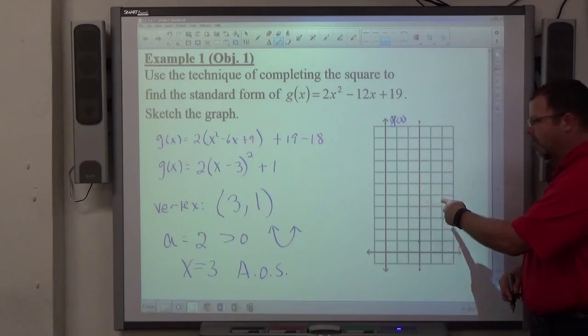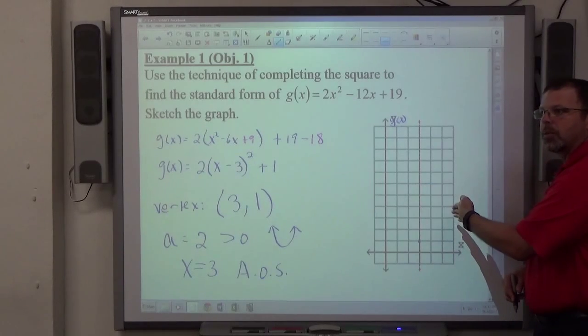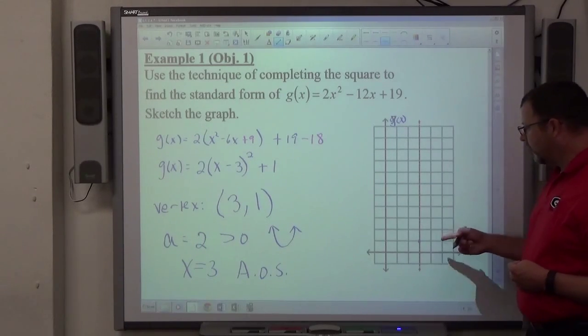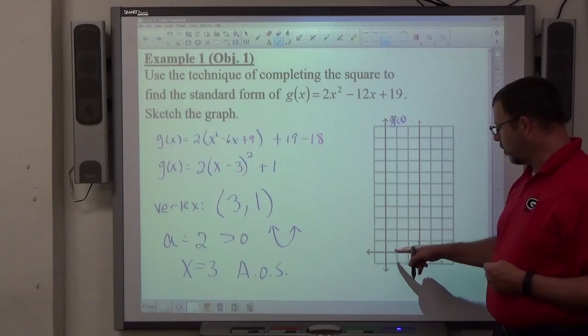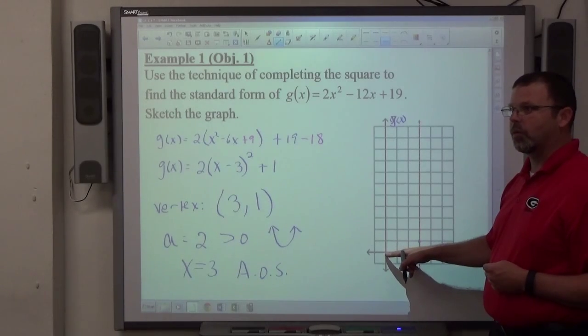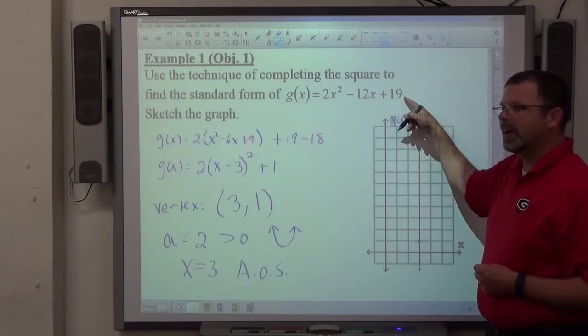This axis of symmetry is a mirror. If I have a point on one side of the mirror, there's a point in the same location on the other side of the mirror. All I have to do is figure out another point. I usually go with the y-intercept, 0, 19, but I don't want to graph 0, 19.